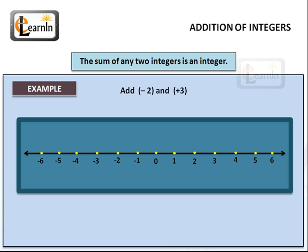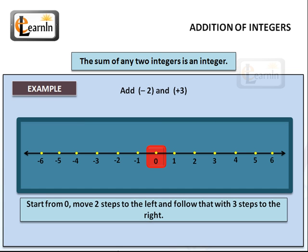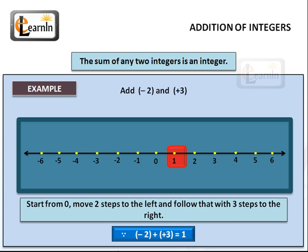Let's look at another example. Consider that we want to add negative 2 and positive 3, or minus 2 and plus 3. First we need to identify minus 2 on the number line — that would be 2 spaces to the left from 0. To add 3 to this integer, we move 3 places to the right of minus 2 on the number line. If we move 3 places to the right of minus 2, it takes us to 1. Therefore, minus 2 plus 3 is equal to 1. In other words, we started from 0, moved 2 spaces to the left for minus 2, and then followed that with 3 steps to the right for plus 3, and we ended up on positive 1. In mathematical expression, that would be (−2) + (+3) = +1.